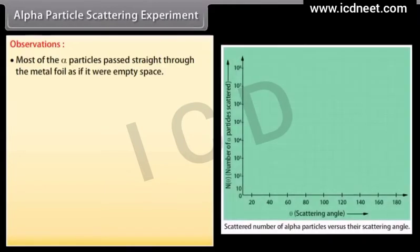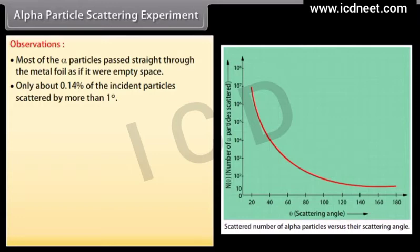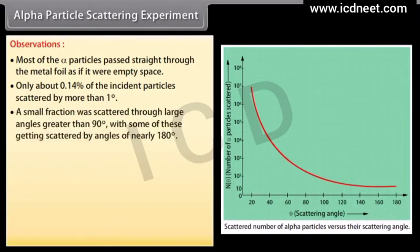Most of the alpha particles passed straight through the metal foil as if it were empty space. Only about 0.14% of the incident particles were scattered by more than 1 degree. A small fraction were scattered through large angles greater than 90 degrees, with some getting scattered by angles of nearly 180 degrees.